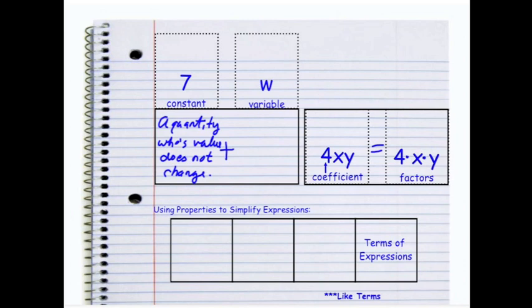Whereas a variable is a symbol, usually a letter, and it stands for an unknown value. So a symbol or letter which represents an unknown value. When I say an unknown value,